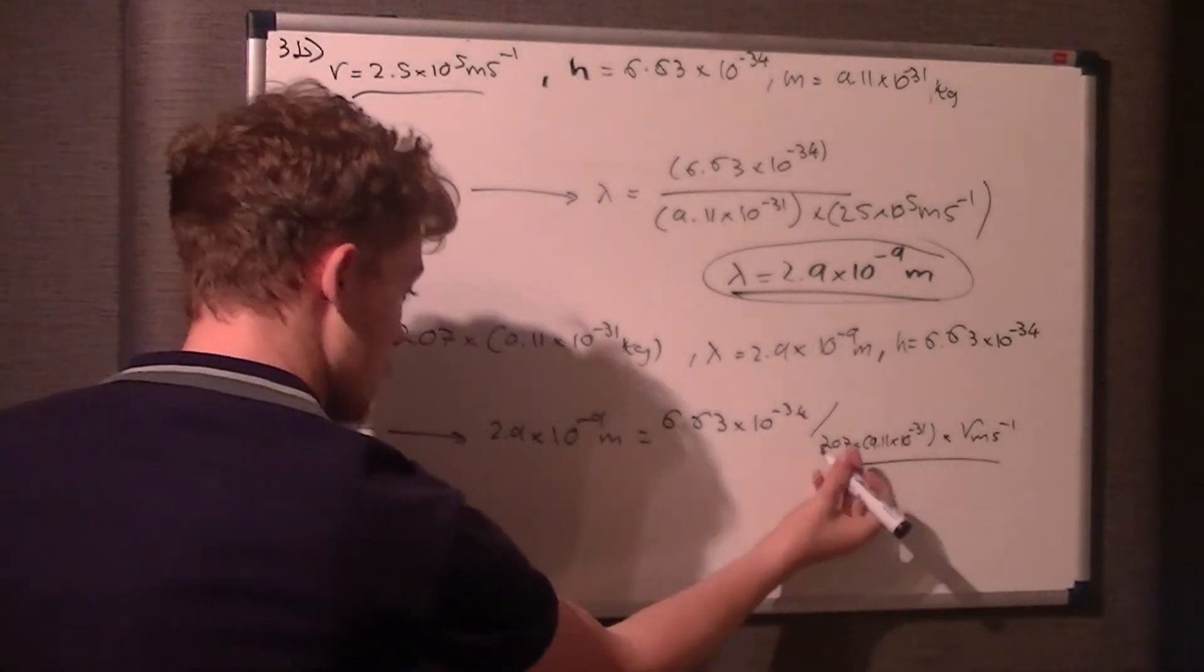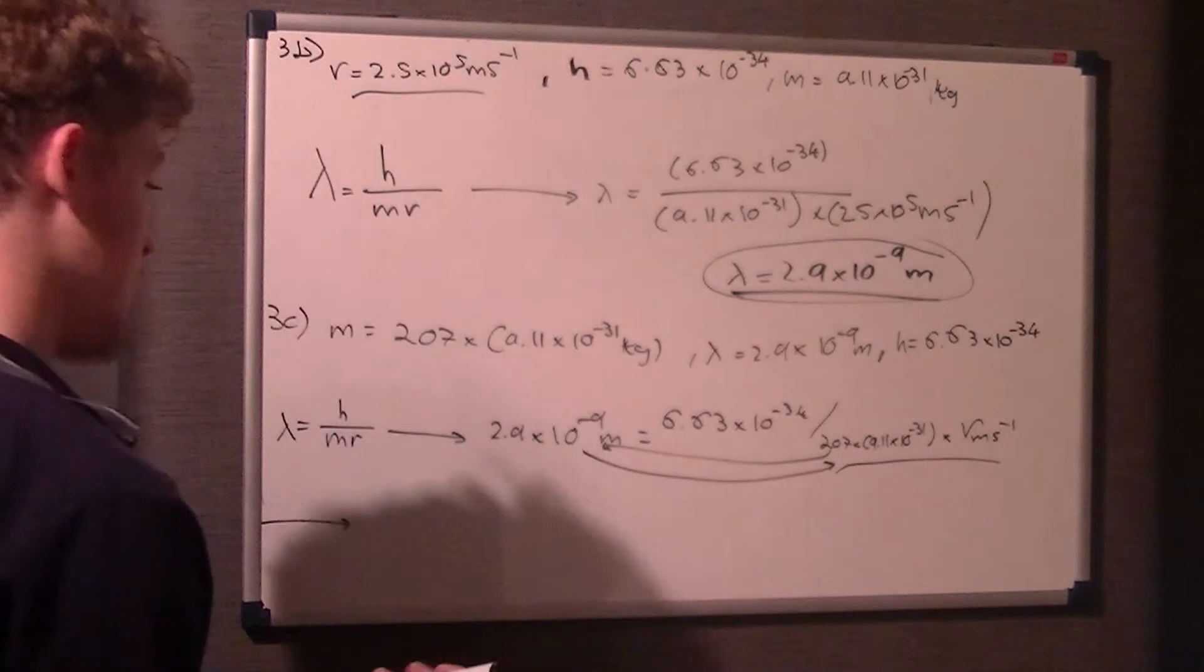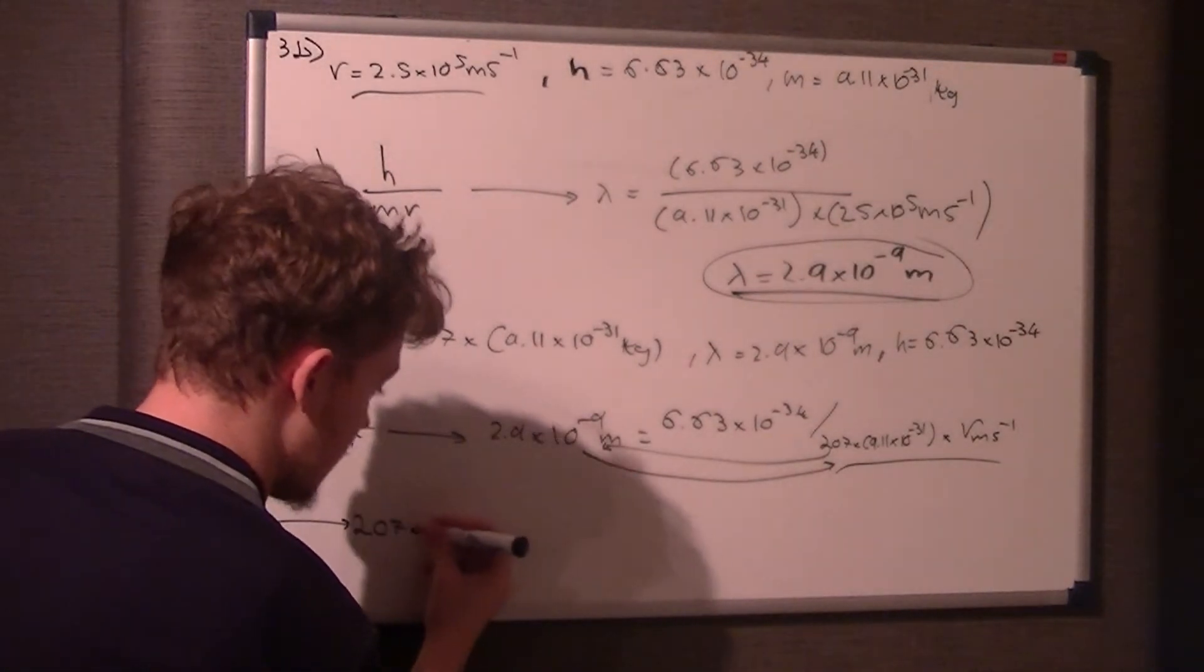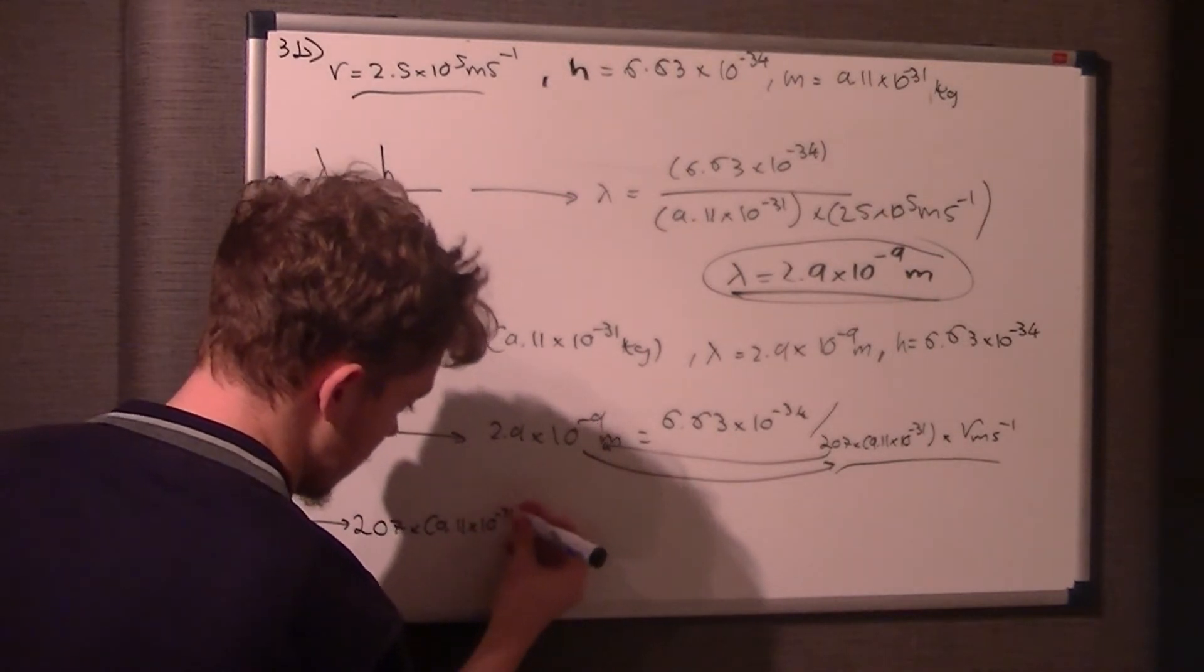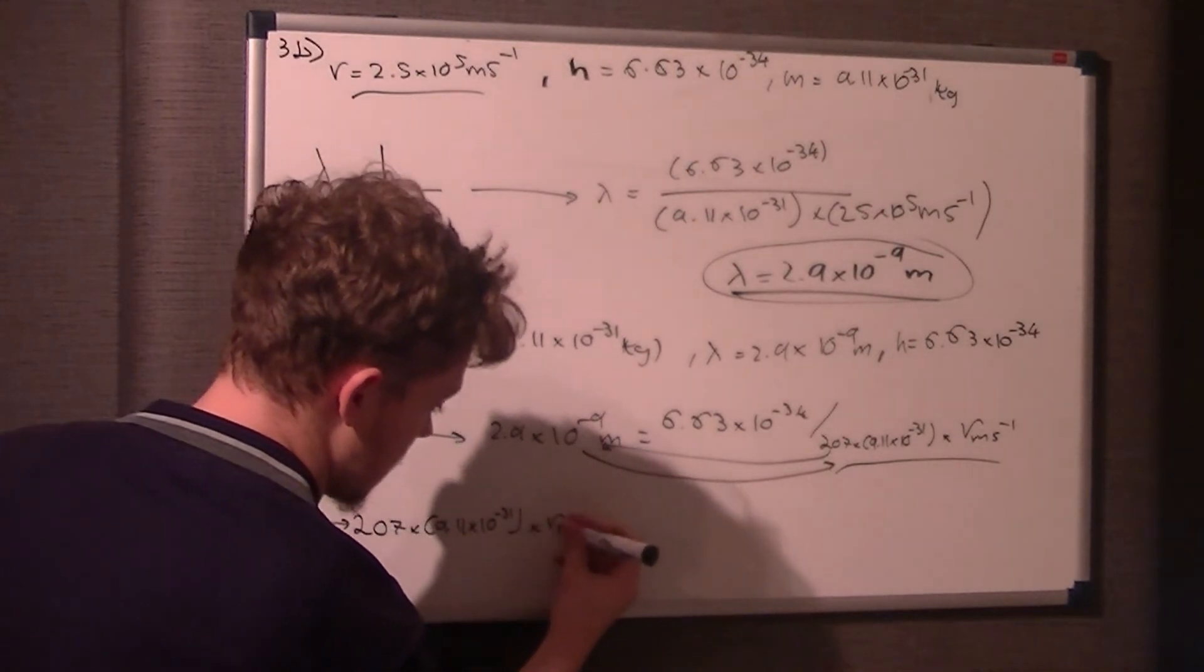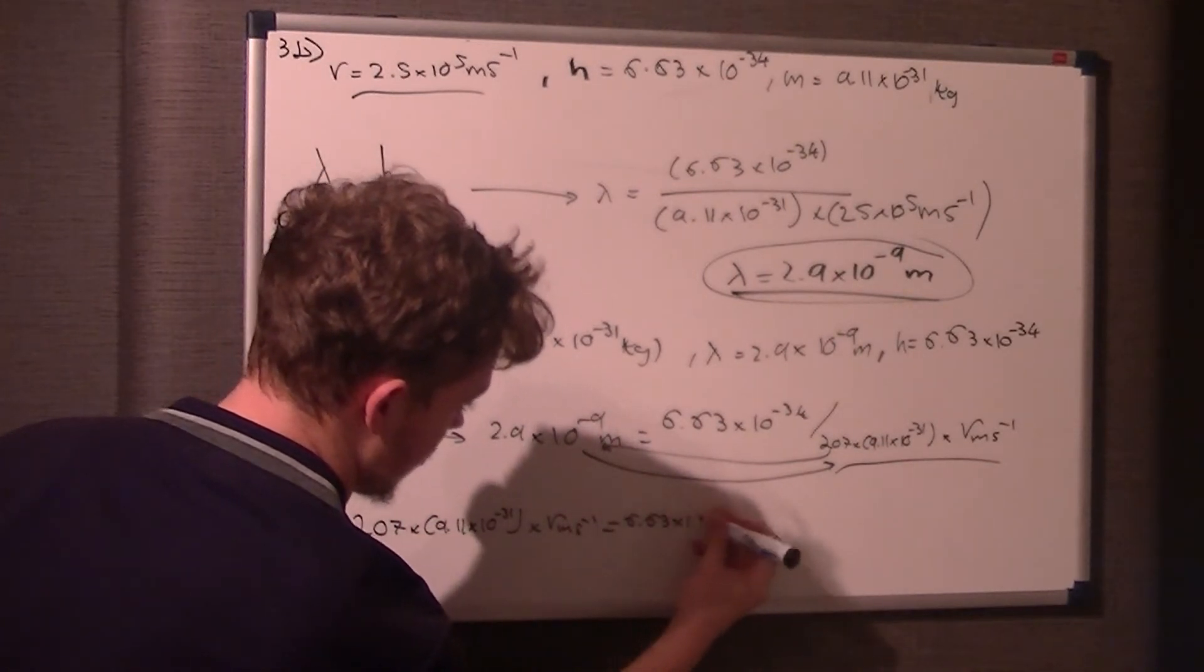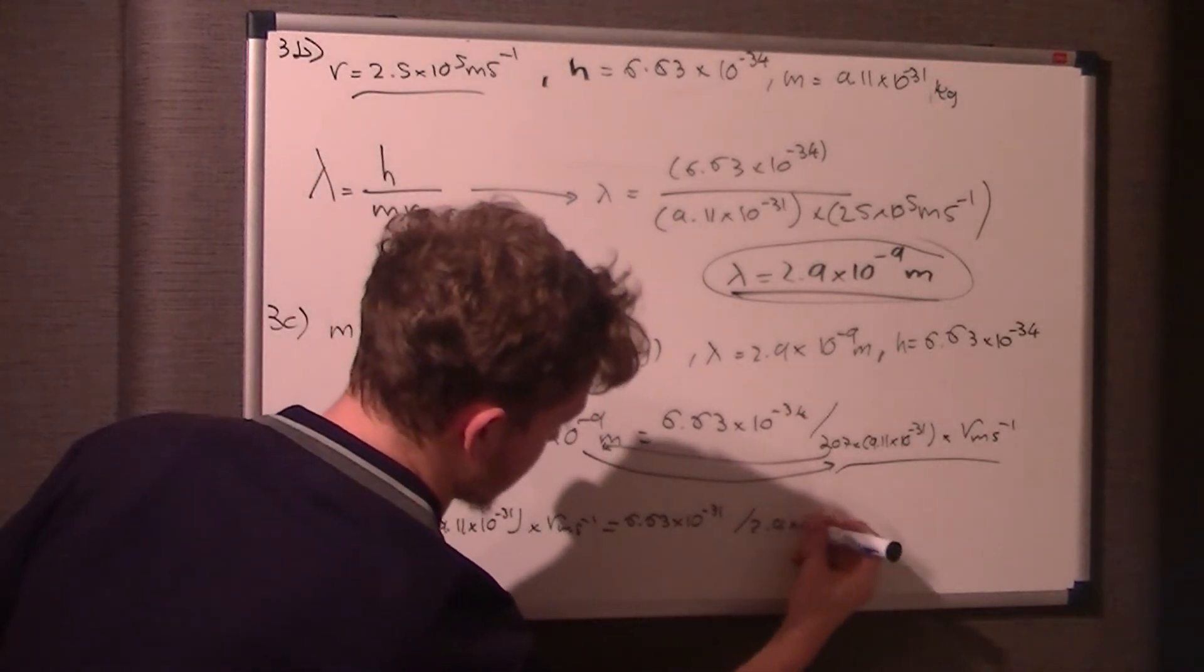You can switch it around, do the old switcheroo, so move that to there and that back to there. So you would say 207 times 9.11 times 10 to the minus 31 times v meters per second equals 6.63 times 10 to the minus 34 over 2.9 times 10 to the minus 9 meters.